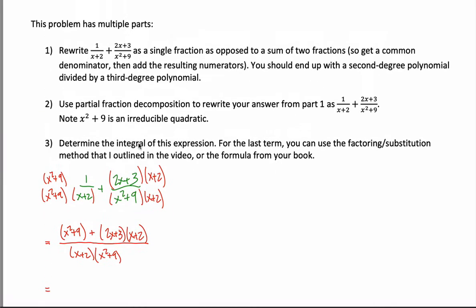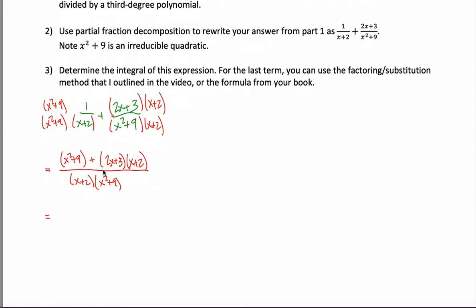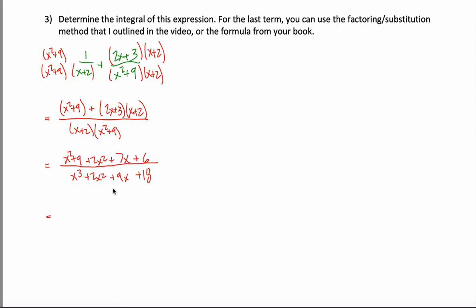Since the question asks me to write this as a second-degree polynomial divided by a third-degree polynomial, I can multiply things out and collect like terms. In the numerator: x squared plus nine, then two x times x gives two x squared; two x times two gives four x, and three times x gives three more x, for a total of seven x; and three times two gives six. So that's three x squared plus seven x plus fifteen. In the denominator: x cubed plus two x squared plus nine x plus eighteen.